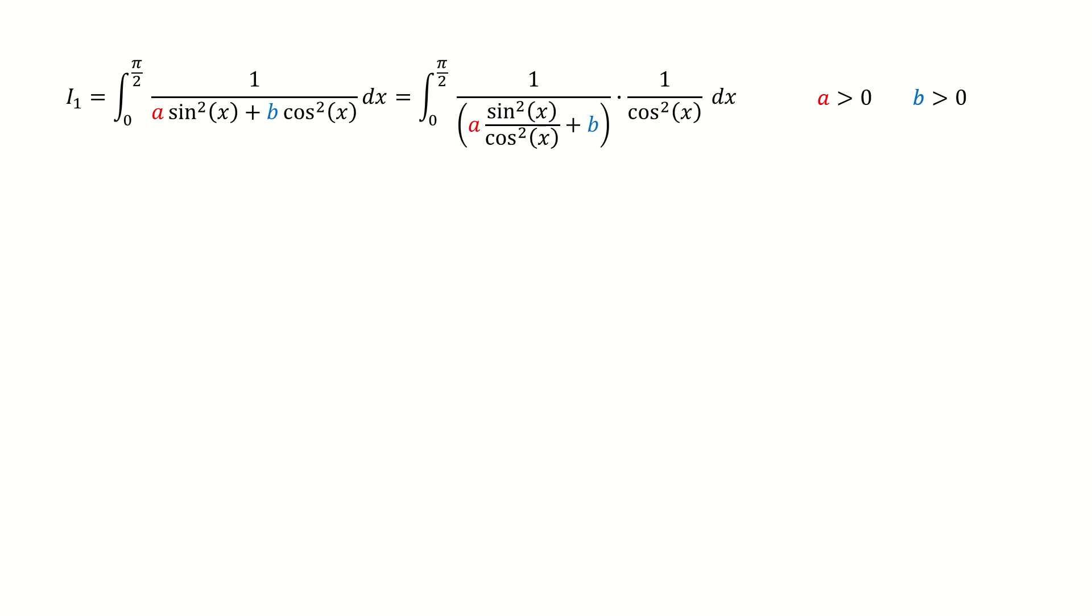The first step is key. Here I take the cosine square out from the denominator. So we can write the integral into this way.